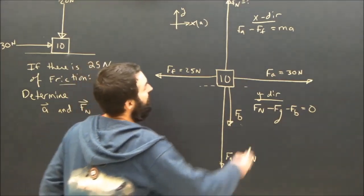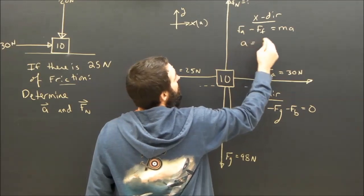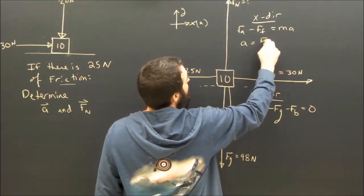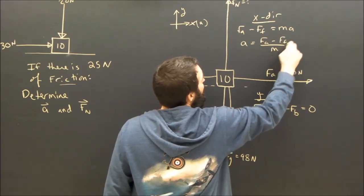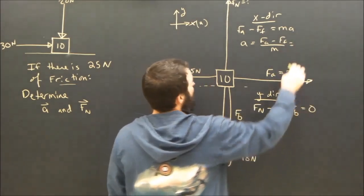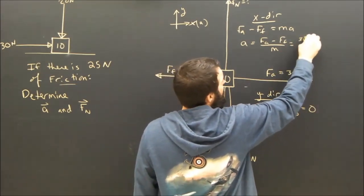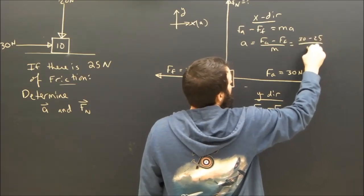So now what am I trying to find? I'm trying to find the acceleration. So I'll look back up here and I'll see the acceleration is equal to FA minus FF over M. We can pretty much do that in our heads. 30 minus 25 divided by 10.